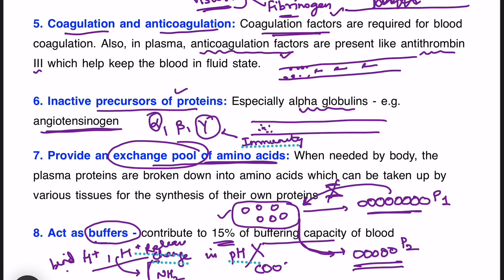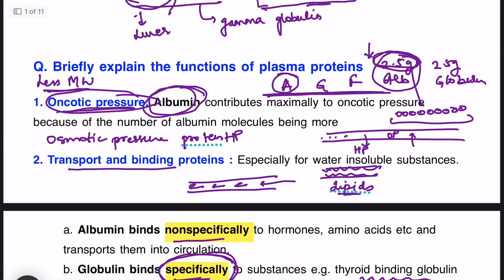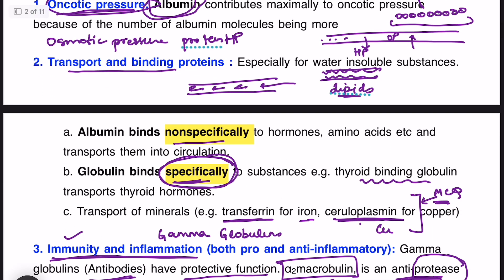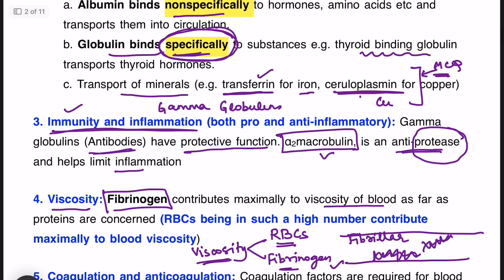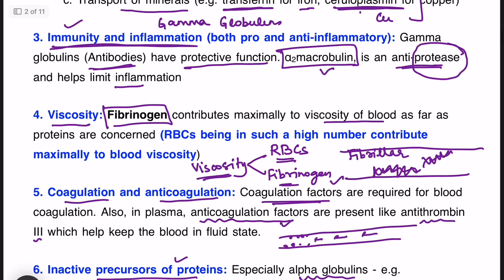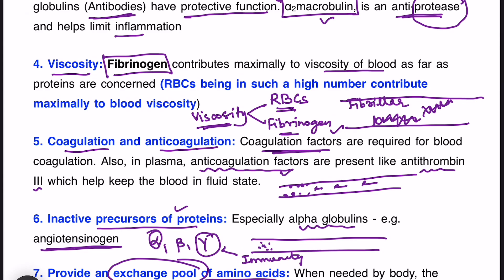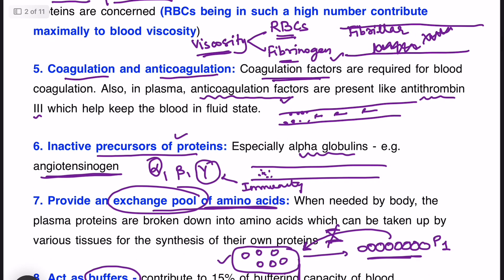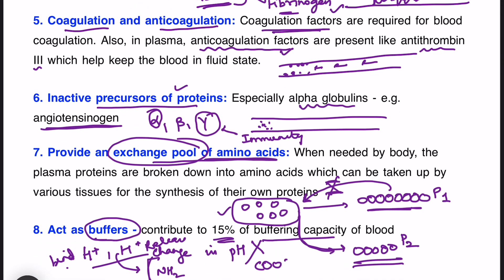To quickly revise the functions of plasma proteins: albumin exerts oncotic pressure; plasma proteins act as transport and binding proteins — albumin binds non-specifically, globulin binds specifically; iron binds to transferrin, copper binds to ceruloplasmin; immunity and inflammation via antibodies and anti-proteases; viscosity provided by fibrinogen; coagulation and anticoagulation factors; inactive precursors of proteins; exchange pool of amino acids; and buffering capacity.